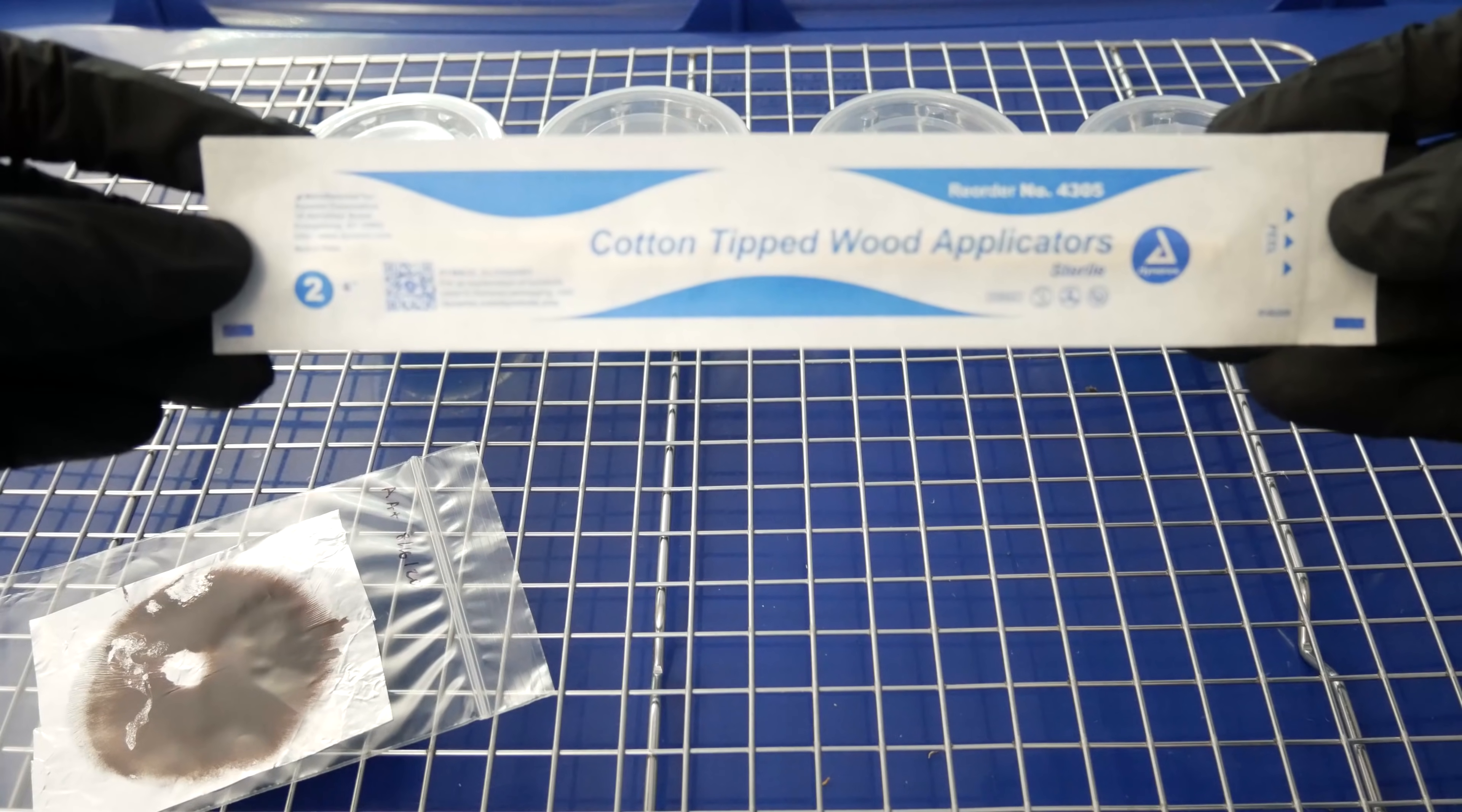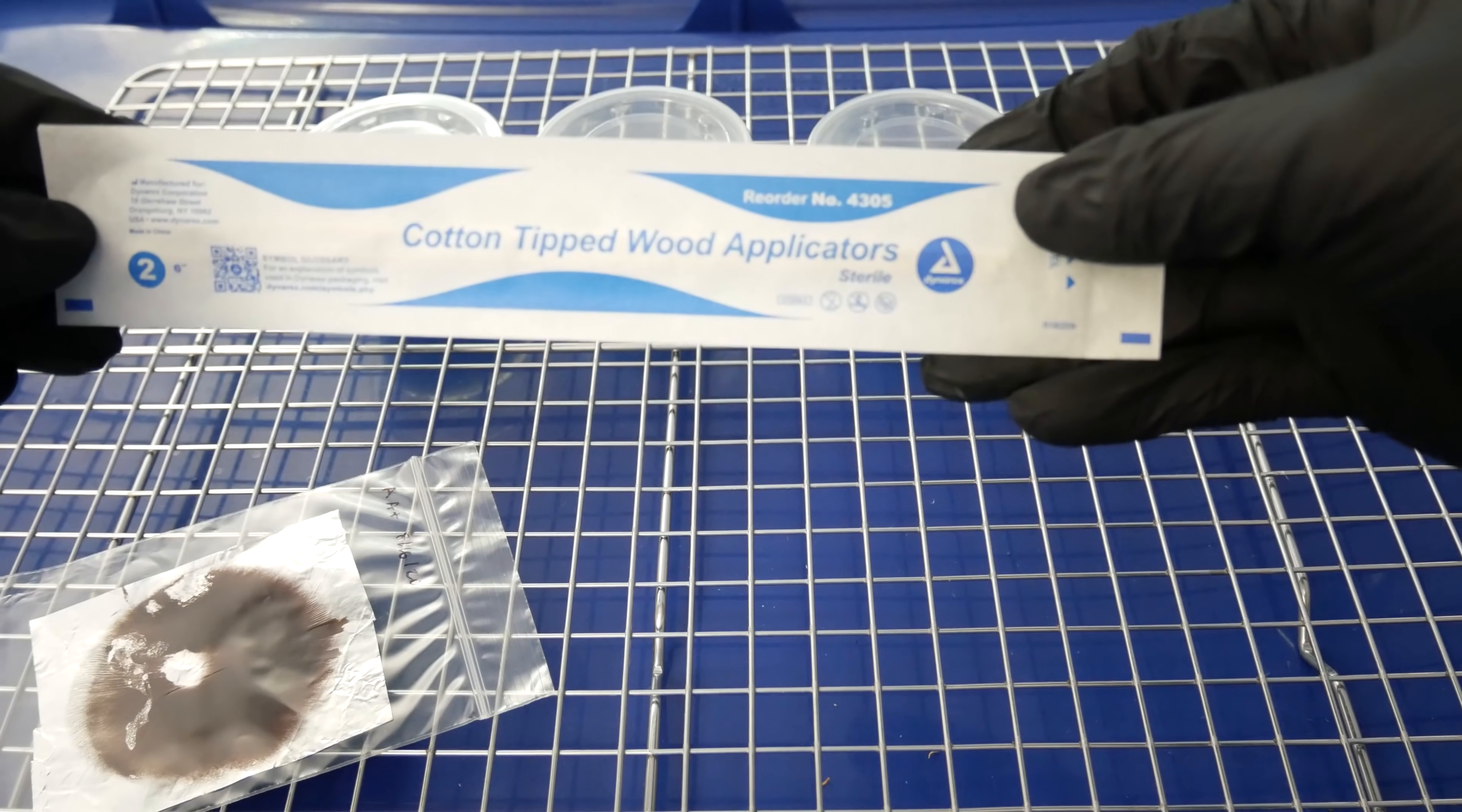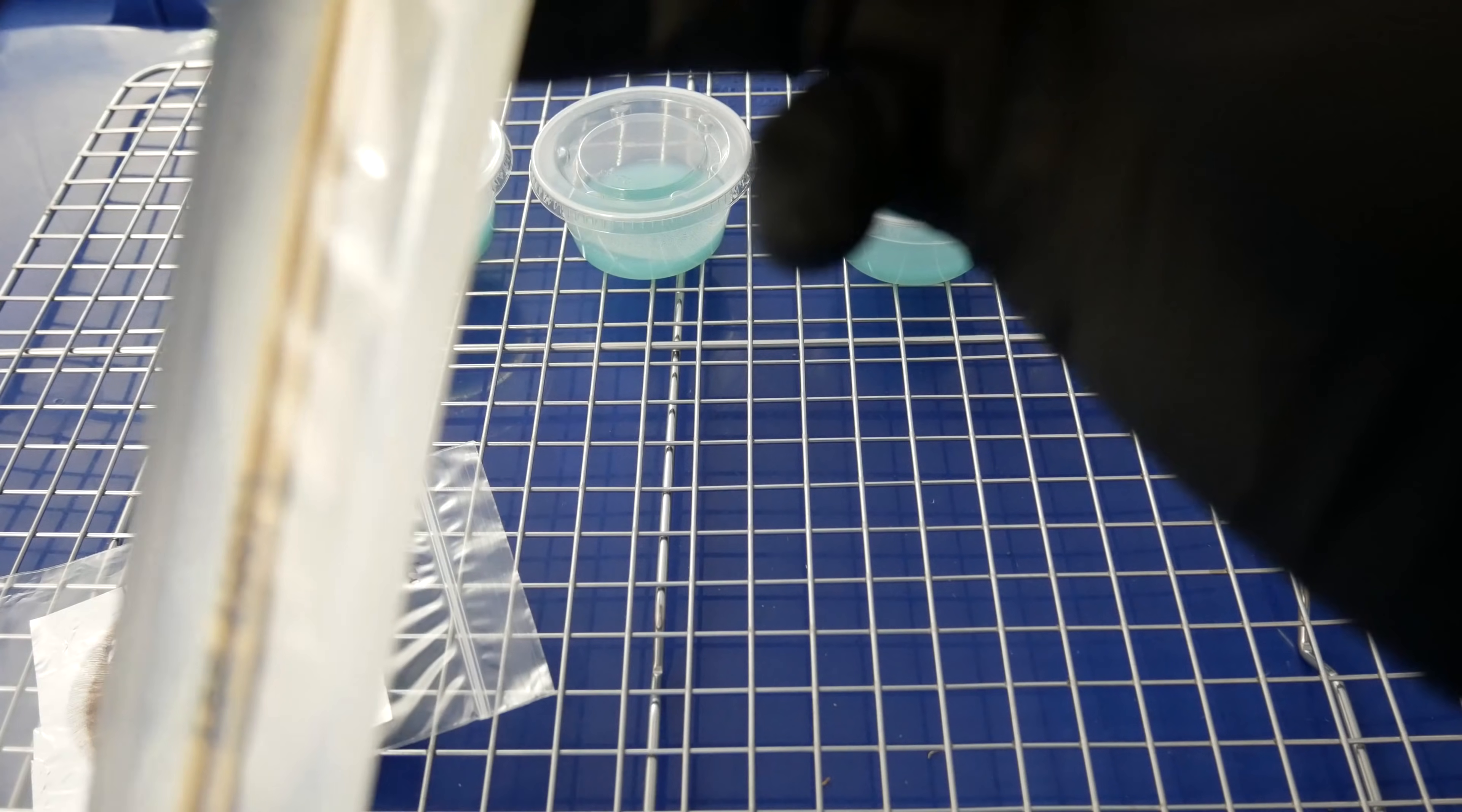Now start off with your sterile cotton swab. I like to use these cotton tip wood applicators. They come pre-sterilized already. You can buy a pack of these on Amazon for pretty cheap. I'll have links in the description below on where you can get them.